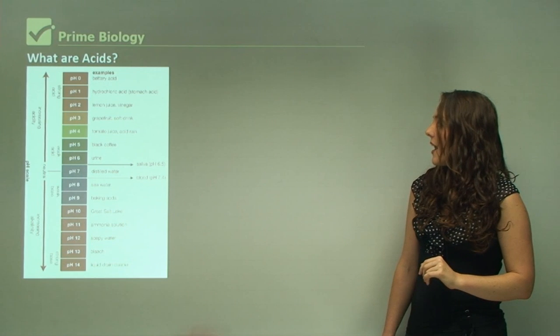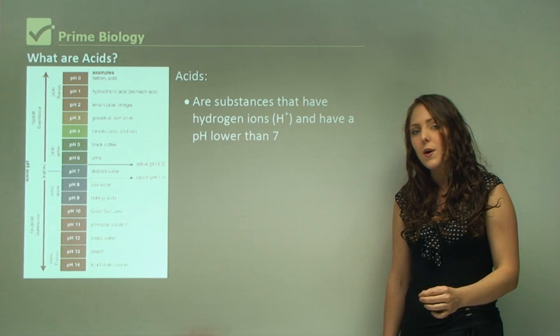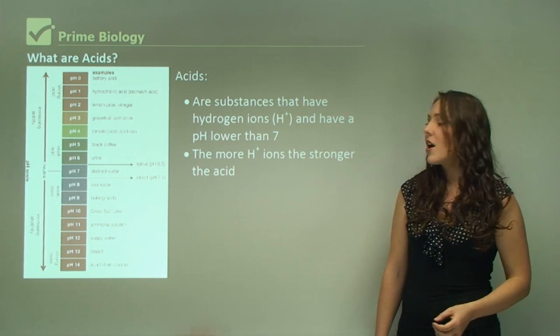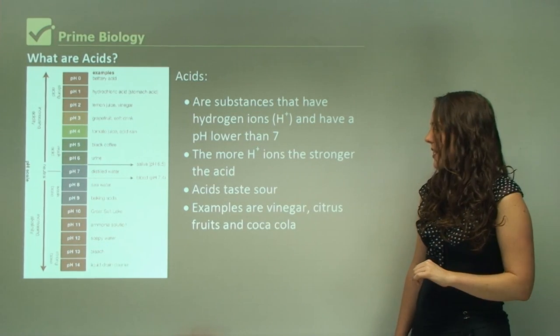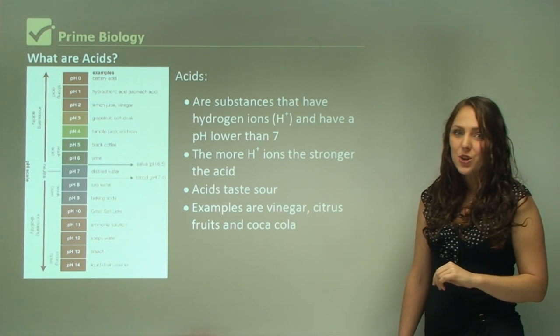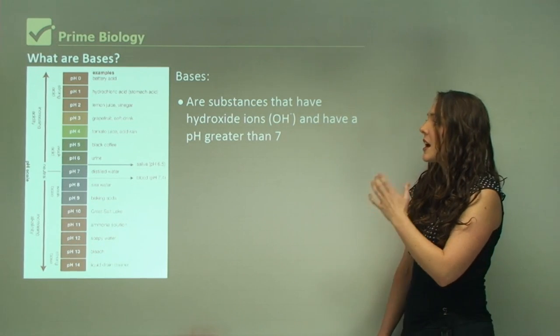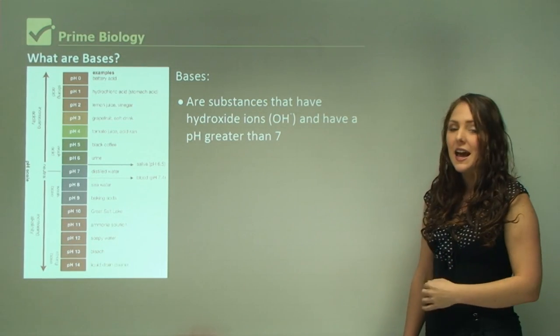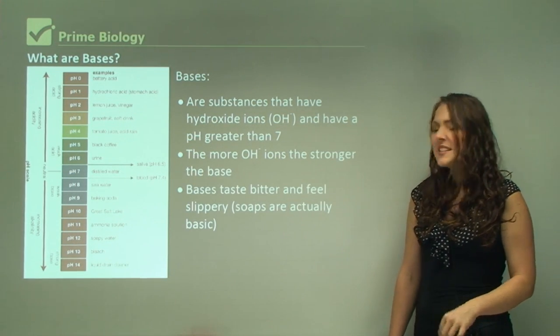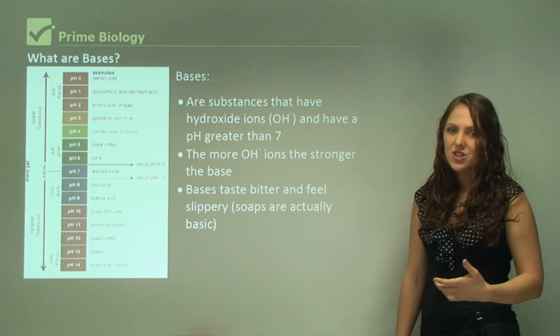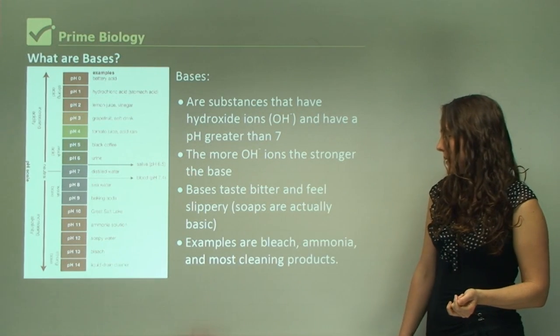Cheese is between 5.1 and 5.9, yogurt is pH of about 4, jelly is 3, honey is 3.9 to 6. What are acids? Acids are substances that have hydrogen ions and a pH lower than 7. The more hydrogen ions, the stronger the acid. Acids taste sour or sickly sweet. Examples are vinegar, citrus fruits, and coca-cola. Bases are the opposite. They have hydroxide ions and a pH greater than 7. The more hydroxide ions, the stronger the base. Bases taste bitter and feel slippery. Soaps are basic. Examples are bleach, ammonia, and most cleaning products.